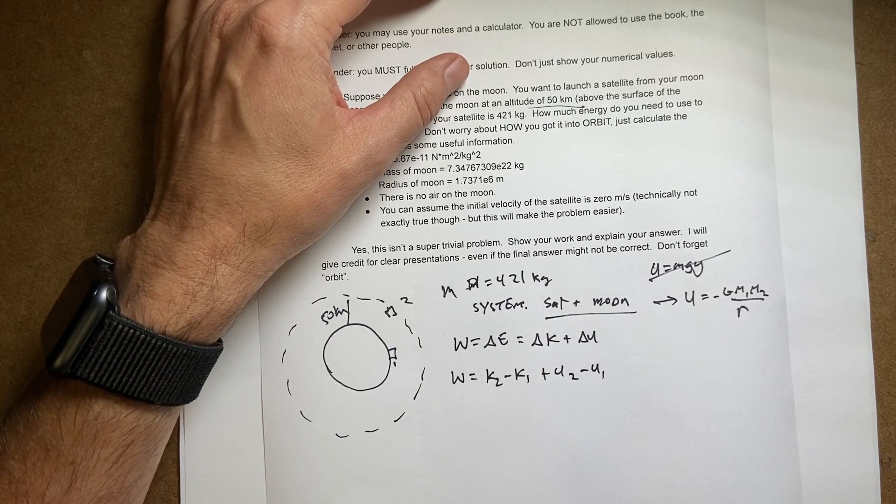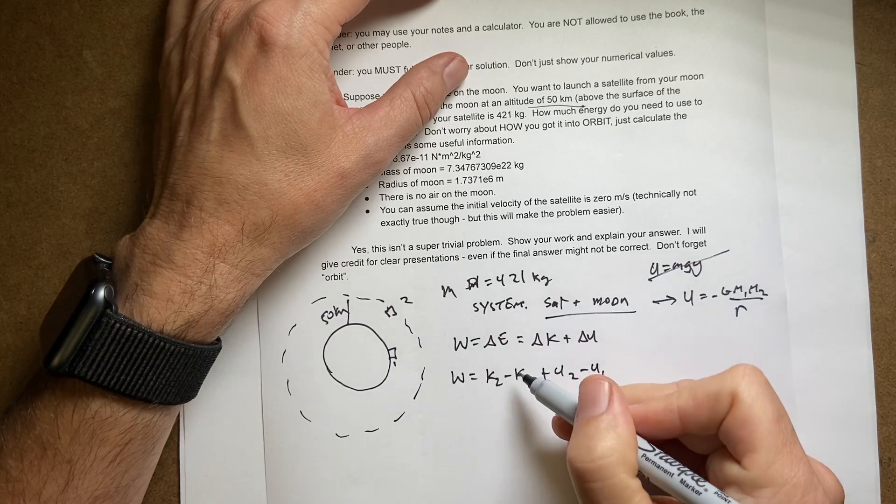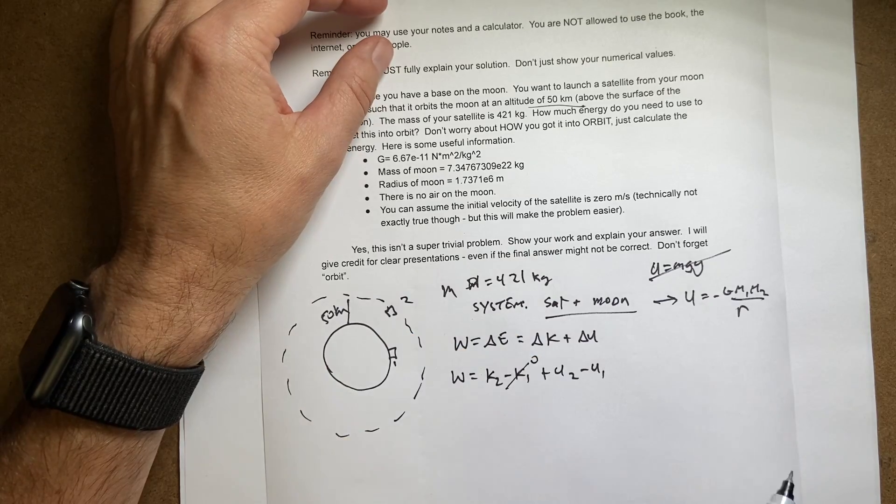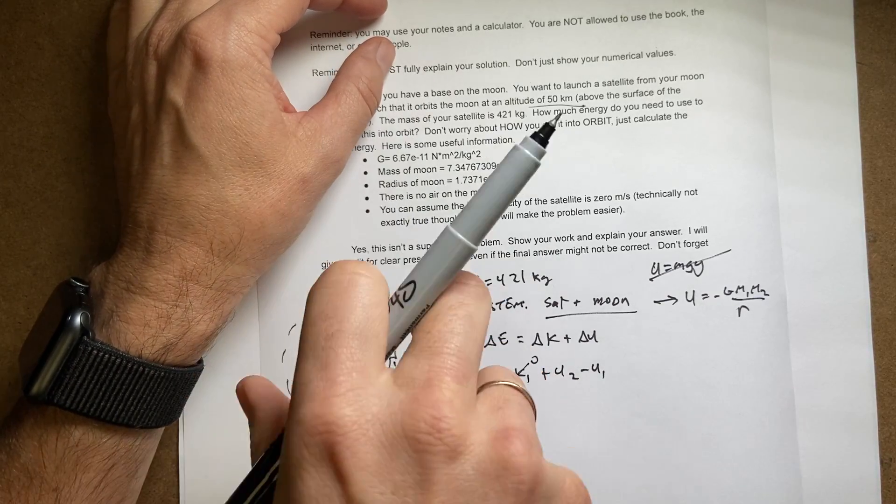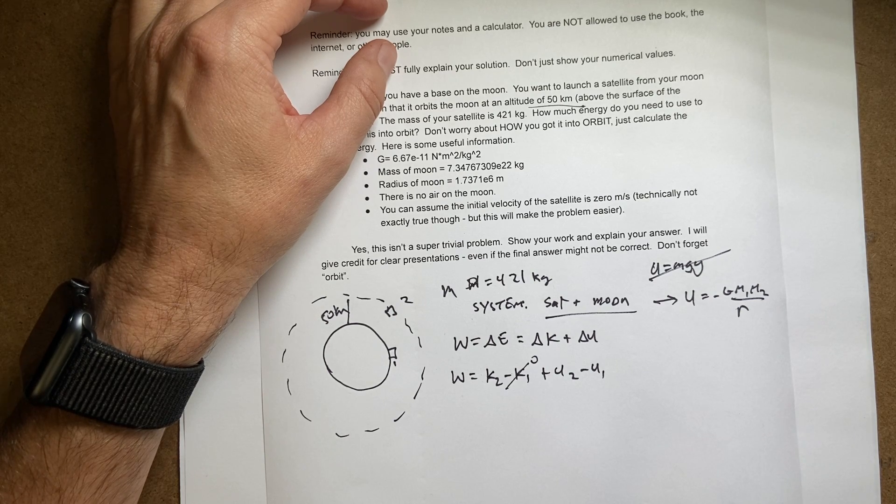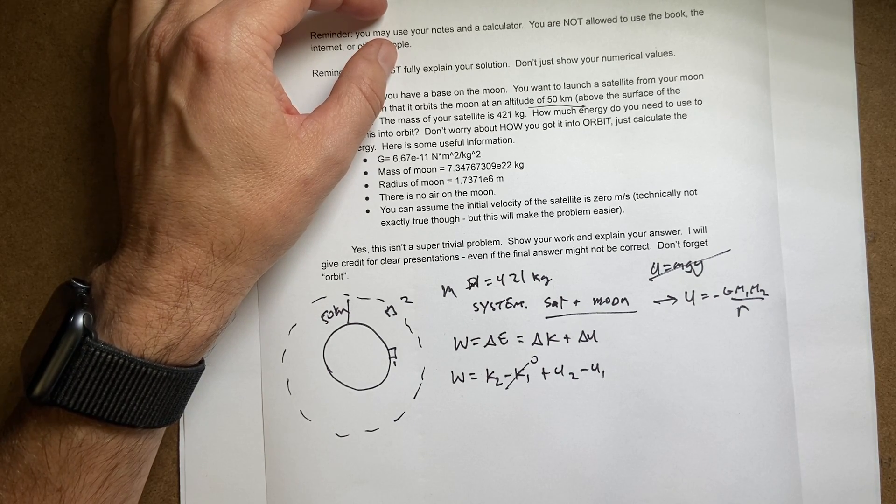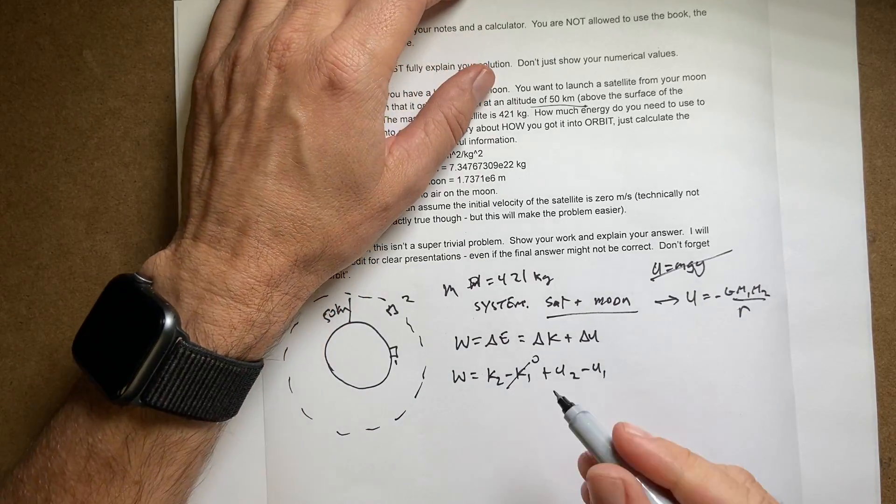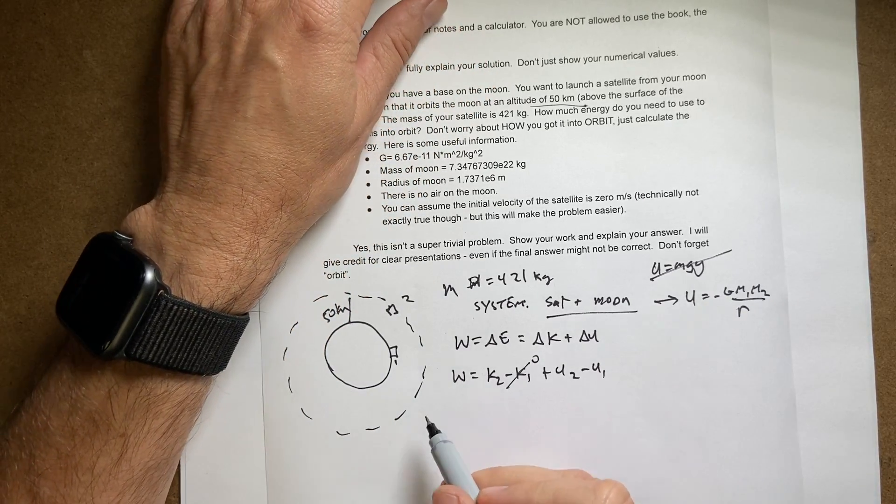Now one of these terms is zero. The term that is zero is this one, k1. Because we're assuming it starts from rest. If it's on the equator of the moon and the moon is rotating, it's not at rest. But it's pretty darn close to zero because the moon doesn't rotate very fast. So that's a good approximation.